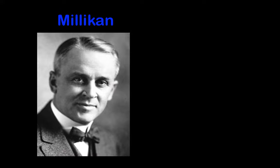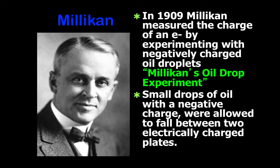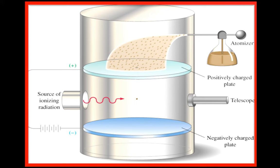The next scientist we will consider is Robert Millikan. In 1909, Millikan measured the charge of an electron by experimenting with negatively charged oil droplets in the famous Millikan Oil Drop experiment. Small drops of oil with a negative charge were allowed to fall between two electrically charged plates. In a series of experiments, Millikan was able to measure the charge of an electron.